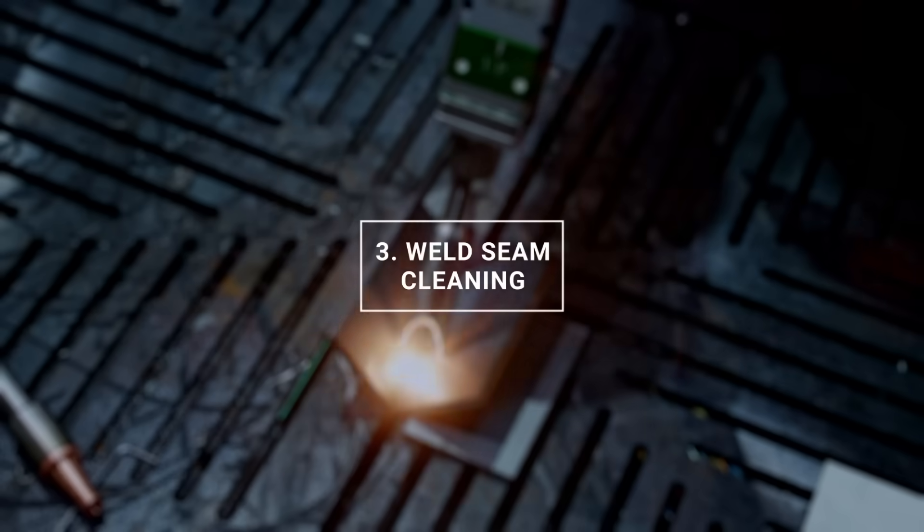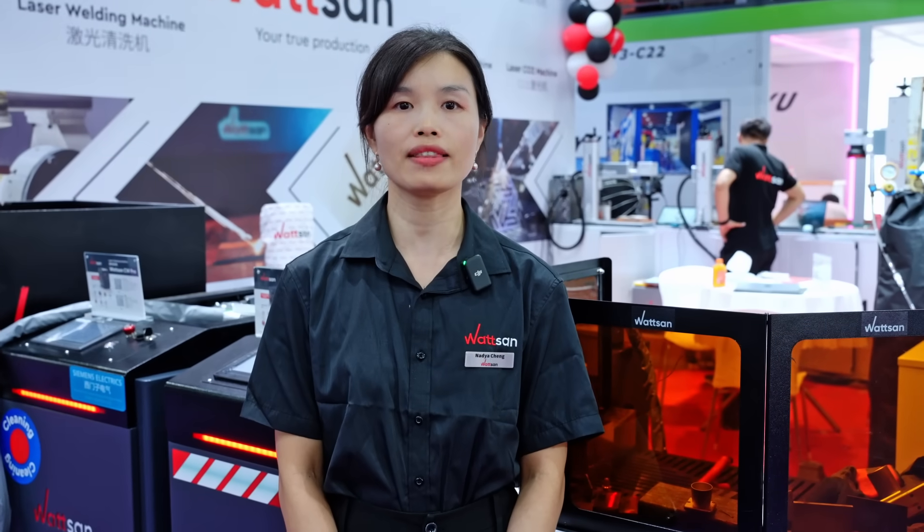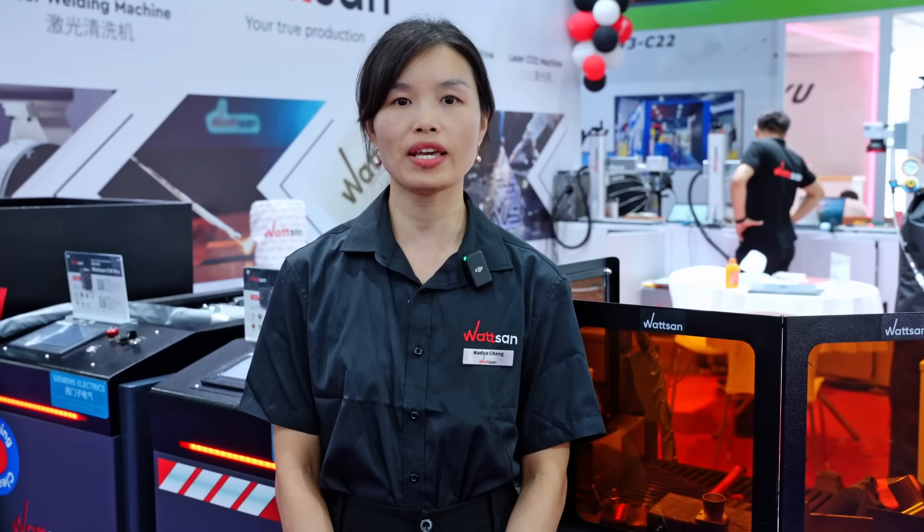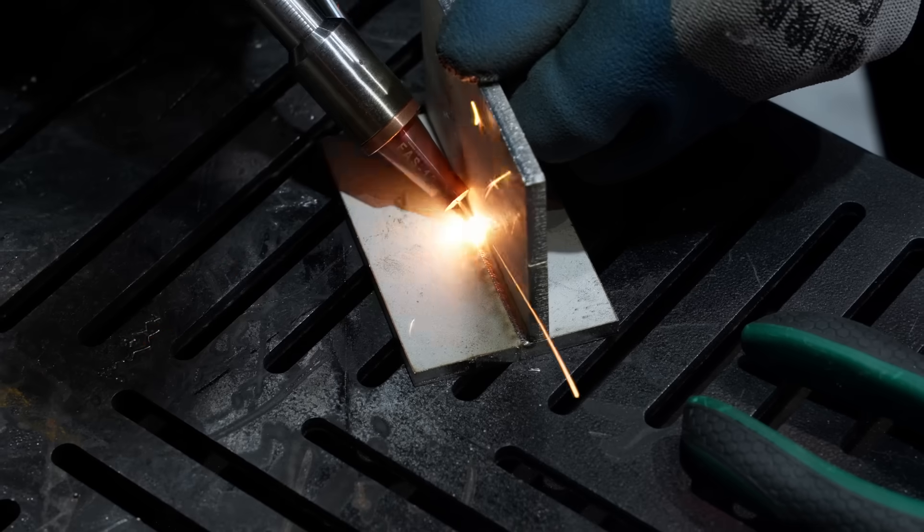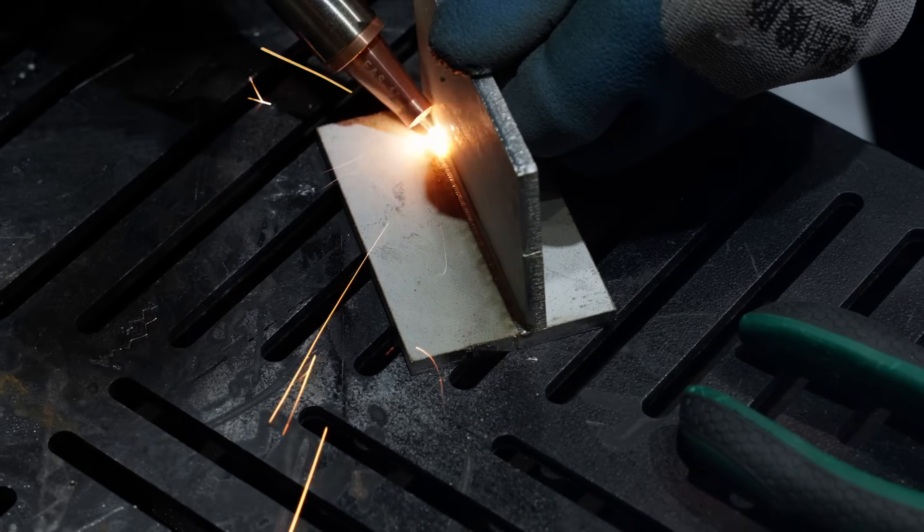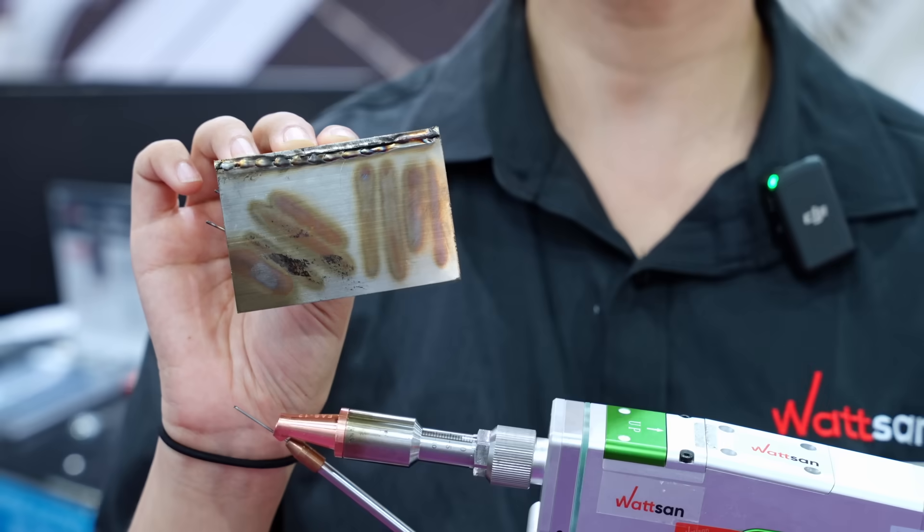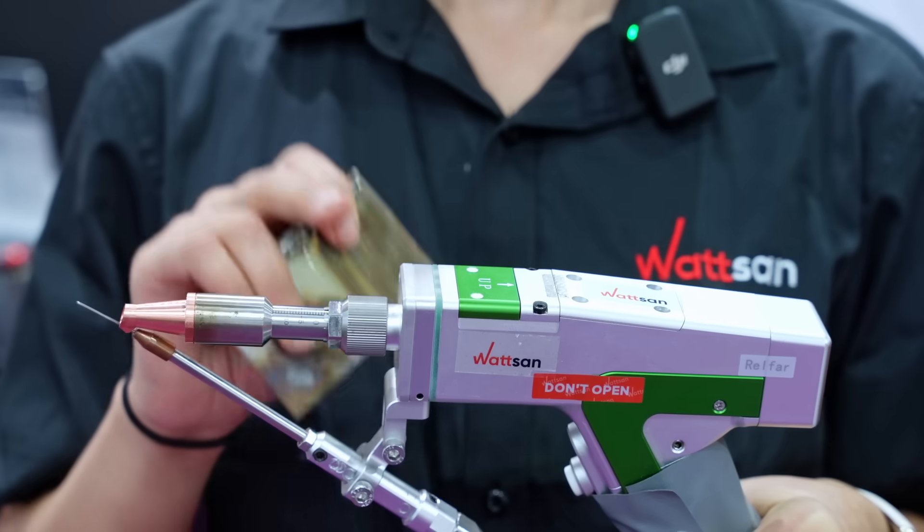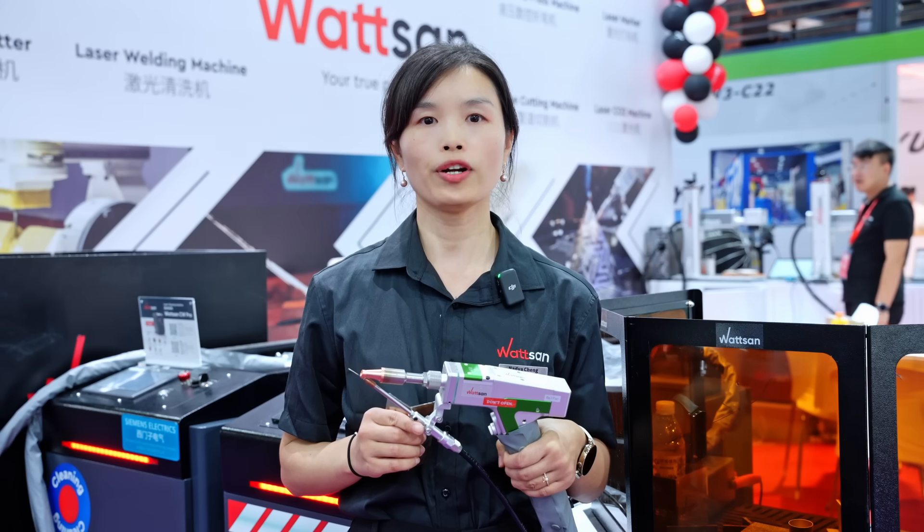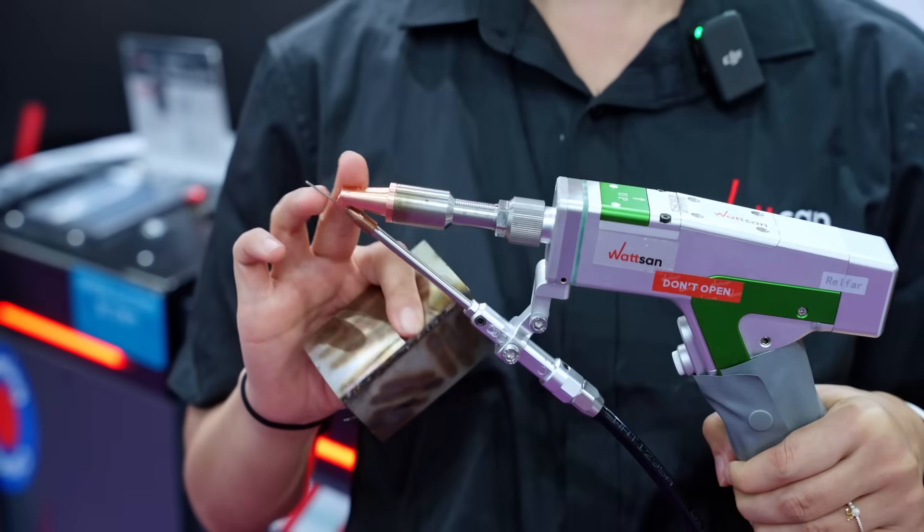Third, weld seam cleaning. We decided to highlight this function because of its speed and specific focus. For example, after laser welding, we need to clean the seam. We can change the module and length, or we can just change the nozzle.